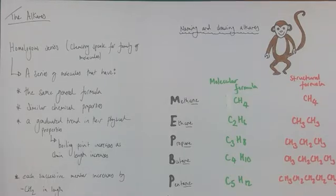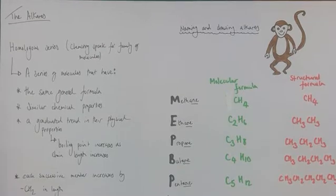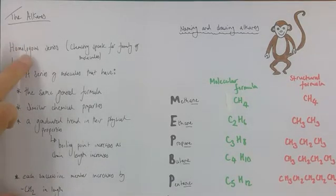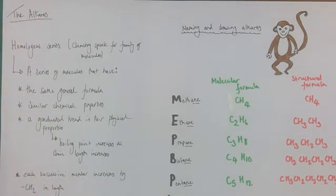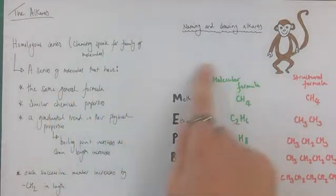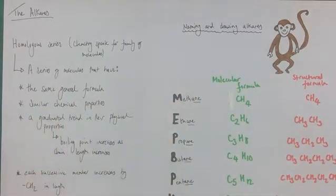This video is focused on the molecules known as the alkanes. The alkanes are members of something called a homologous series, and there are many different homologous series in organic chemistry. Homologous series is chemistry-speak for family of molecules. This is what you want to describe when talking about a homologous series: They are a series of organic molecules that have the same general formula and similar chemical properties because they all contain the same functional group.